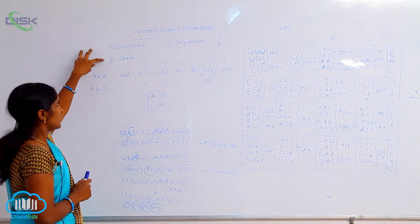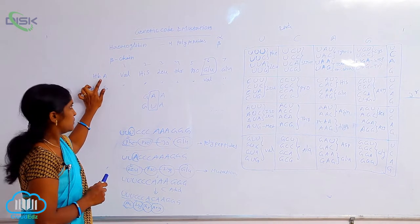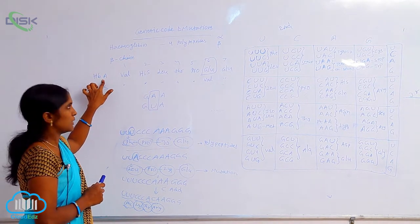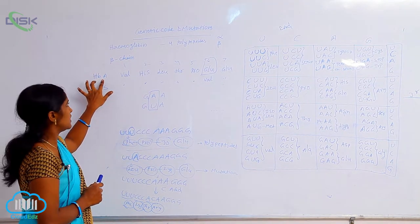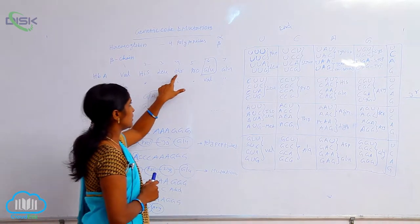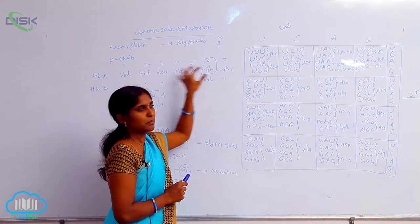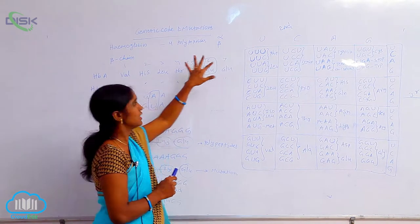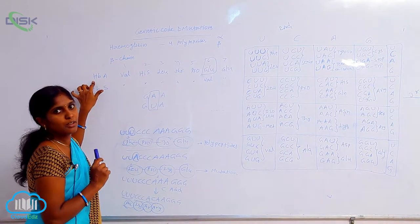In the beta chain, a normal hemoglobin person has the amino acids valine, histidine, leucine, threonine, proline, glutamic acid, glutamic acid. This is the series of amino acids present in the normal hemoglobin.